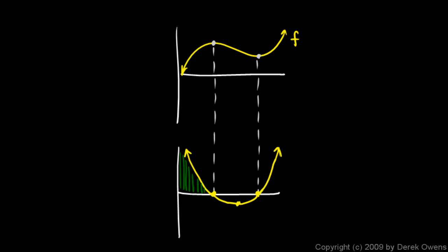As I move to the right, I sweep out some area under this graph, and that area gets bigger as I move further to the right. So if I move to the right on this graph, we see the value of this graph increasing.